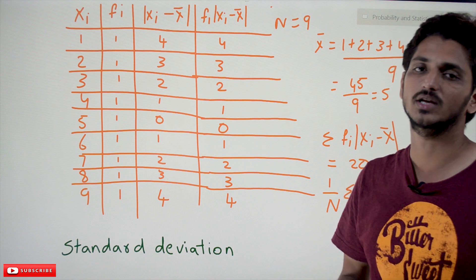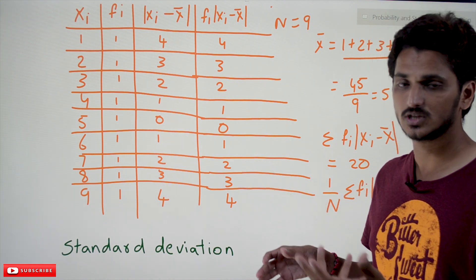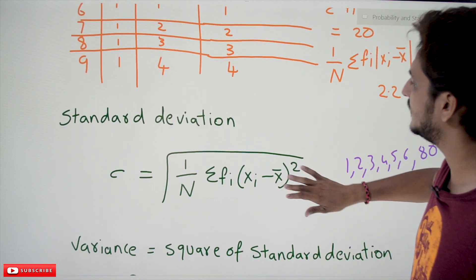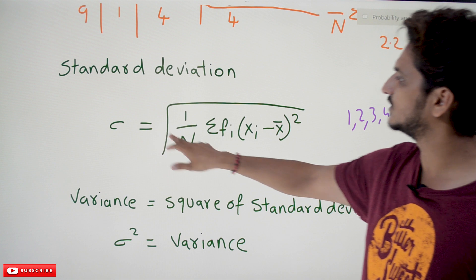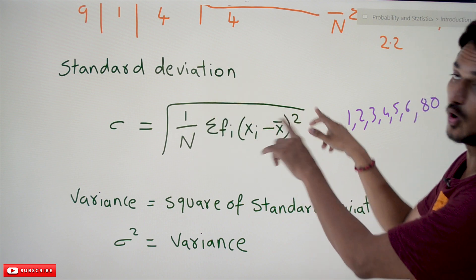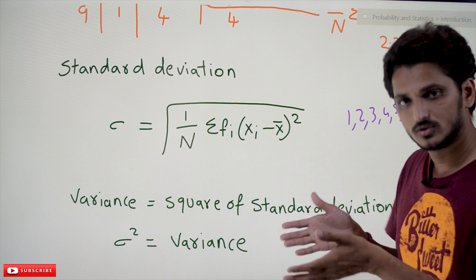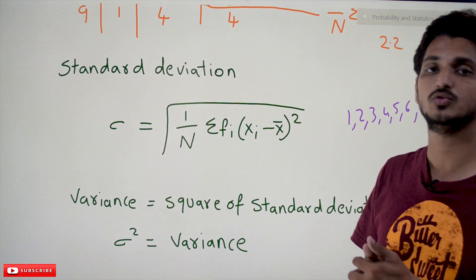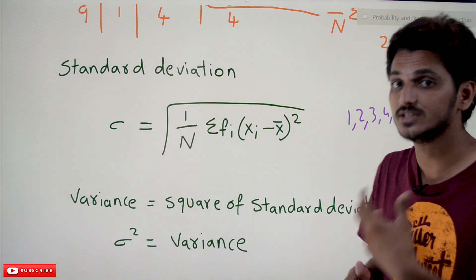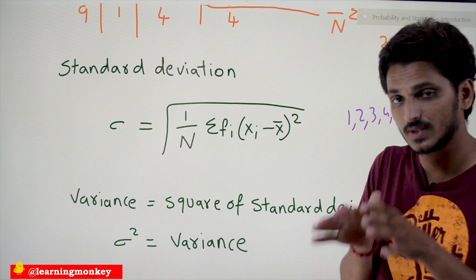Standard deviation is very similar to mean absolute deviation, but it is used most often as a measure of spread. The standard deviation equation is: σ = square root of (1/N × Σ Fᵢ(Xᵢ − X̄)²). Instead of taking the absolute value to avoid negatives, here we square the difference. Because we square it, we then take the square root to bring the value back to the original scale.